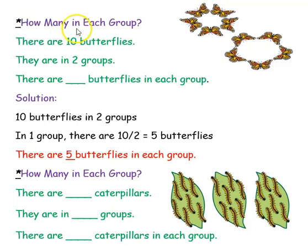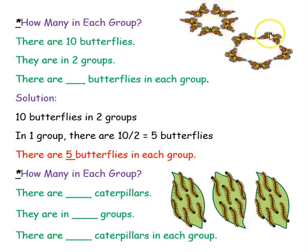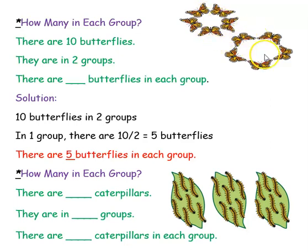The first example is: how many in each group? So there are 10 butterflies. See here: 1, 2, 3, 4, 5 and 1, 2, 3, 4, 5. So 10 butterflies — 5 plus 5. How many groups are there? 2 groups. 2 groups and totally 10 butterflies.